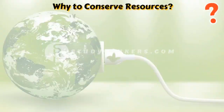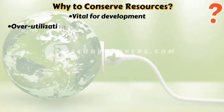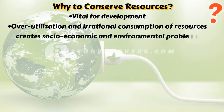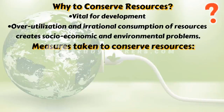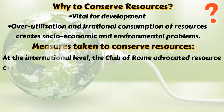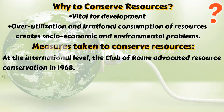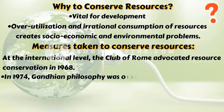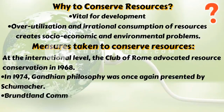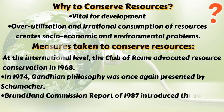Since resources are vital for development, over-utilization and irrational consumption create socioeconomic and environmental problems, making conservation necessary. At the international level, the Club of Rome advocated resource conservation for the first time in a more systematic way in 1968. Subsequently in 1974, Gandhian philosophy was presented by Schumacher in his book 'Small is Beautiful'. The Brundtland Commission report of 1987 introduced the concept of sustainable development, focusing on conservation of resources for the future.